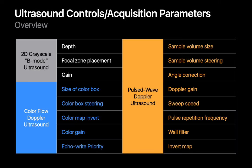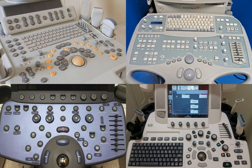And that covers the 16 ultrasound acquisition parameters and controls you'll need to work with when performing most ultrasound scans, and also explains why ultrasound machines have so many controls on them.